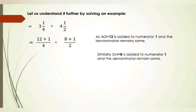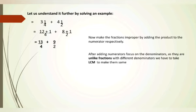So for 3 and 1/4: multiply 4 by 3 to get 12, then add the numerator 1, giving 12 plus 1. The denominator stays as 4. For 4 and 1/2: multiply 2 by 4 to get 8, then add 1. After adding the numerator, the first fraction becomes 13/4 and the second fraction becomes 9/2. Now we have 13/4 plus 9/2 as improper fractions.